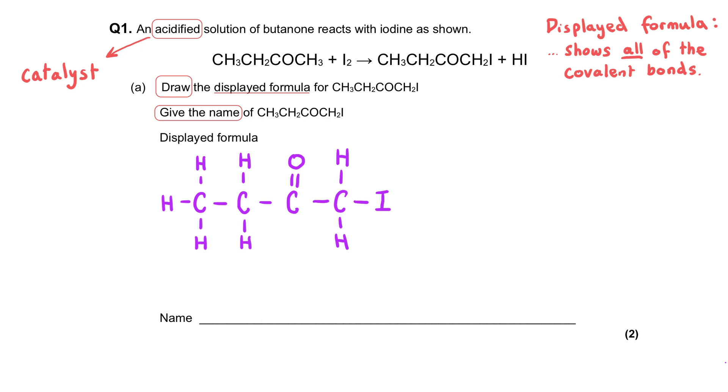We've been asked to name this compound, so the first thing we need to do is find the longest carbon chain in this molecule. There is actually only one carbon chain and it's a chain of four. This means we're going to have 'but-' as a key part of our name.